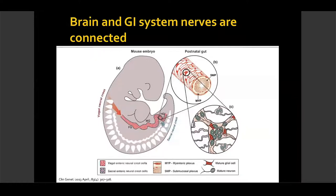It represents a very important component of the autonomic nervous system, and it serves as the intrinsic nervous system for the gut. It's capable of controlling most of the functions of the intestine independently of the central nervous system.